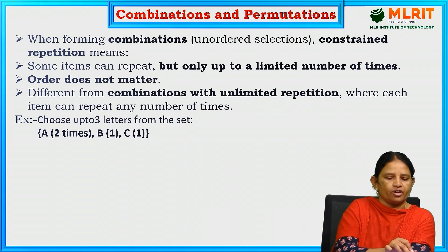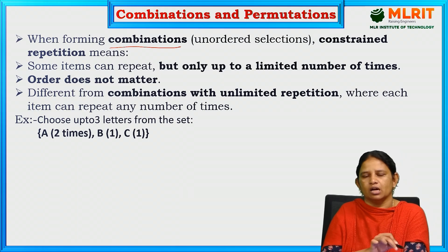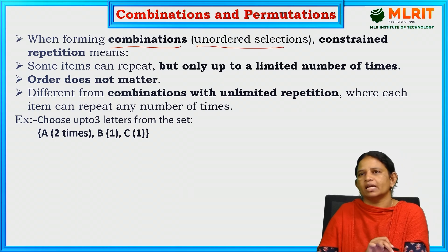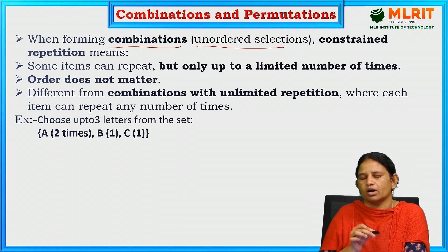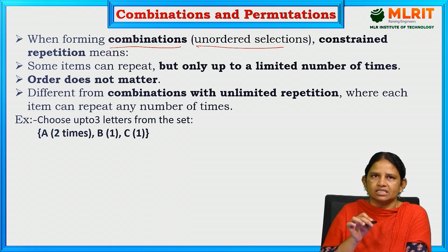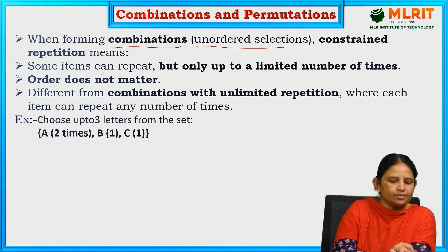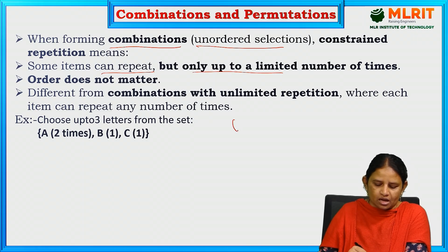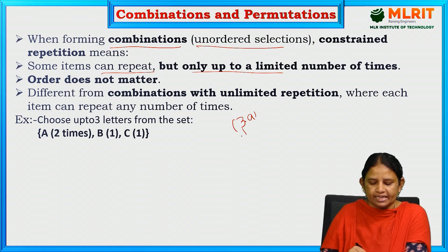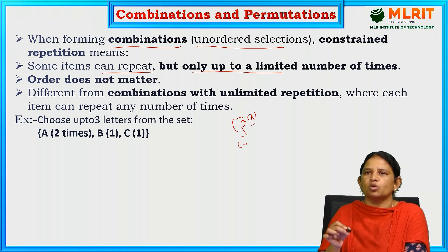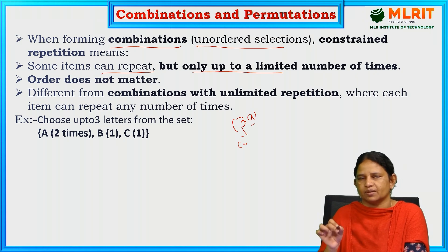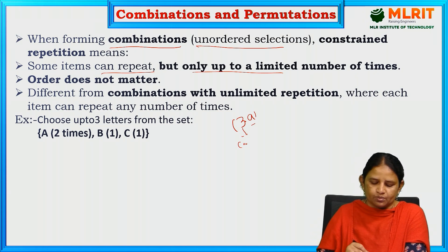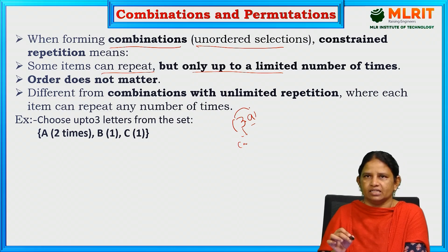In the case of combinations, we are not bothered about the order — selection, order does not matter. But the constraint means some items can be repeated, but only up to some limited number. For example, 3A means A is repeated up to only 3 times. That is a constraint.